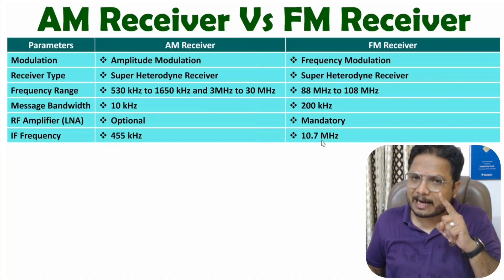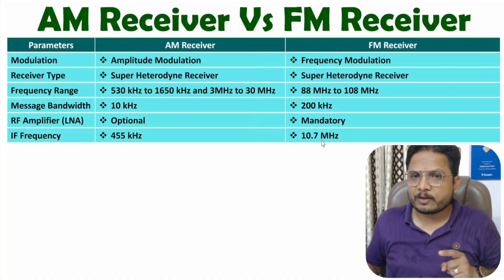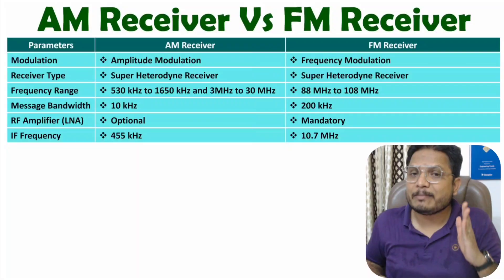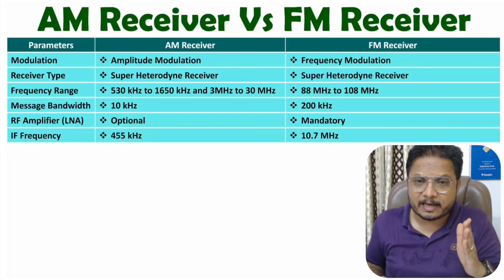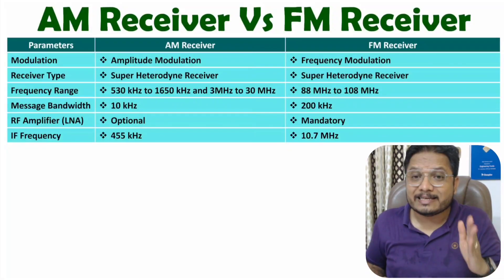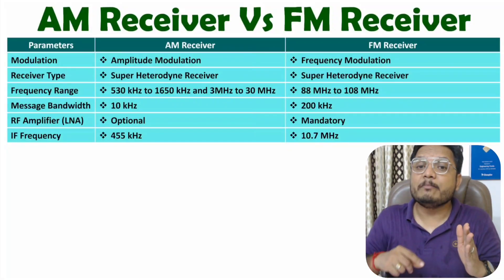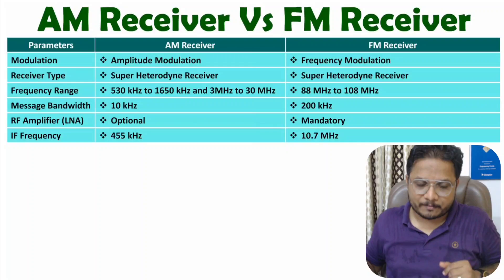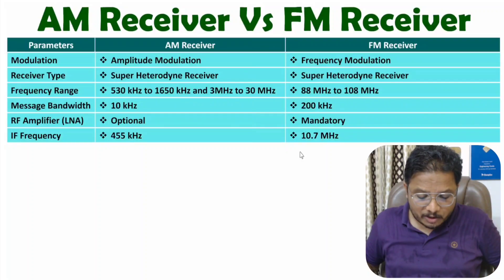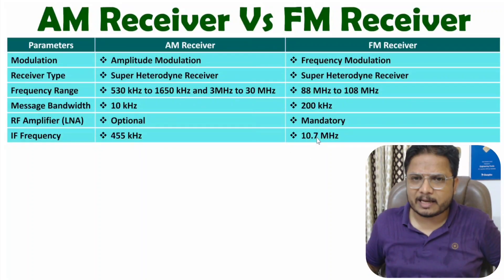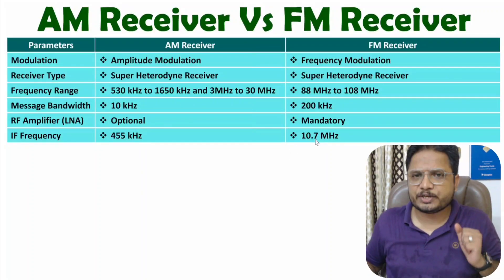One more important point: if you have a higher intermediate frequency, then the receiver can reject the image frequency better. Based on this, both intermediate frequency values are sufficient for their respective ranges.